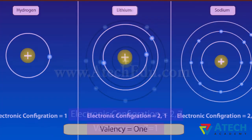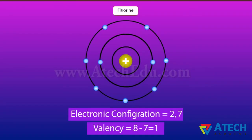If the number of electrons in the outermost shell of an atom is close to its full capacity, then valency is determined differently. For example, the fluorine atom has seven electrons in the outermost shell. It is easier to gain one electron instead of losing seven, so its valency is determined by subtracting seven from the octet, giving a valency of one for fluorine.